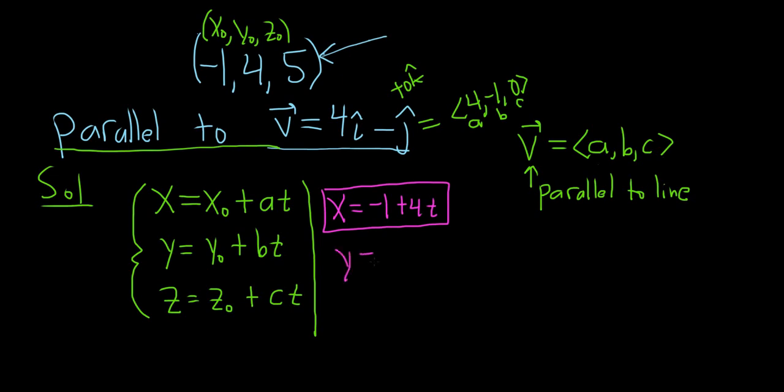Then y is equal to y naught. y naught was four, so four. And then b is negative one, so minus t. That's our second parametric equation.